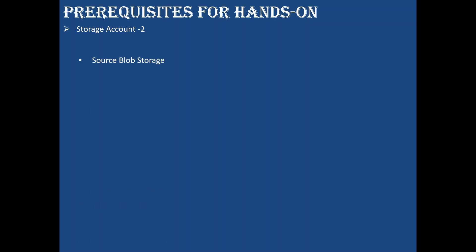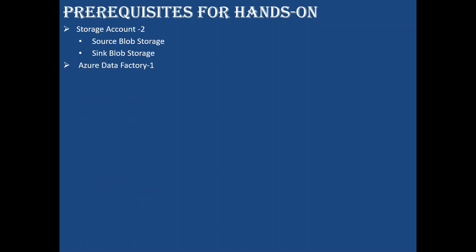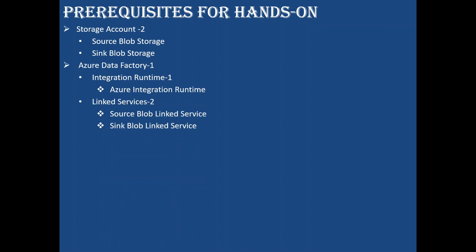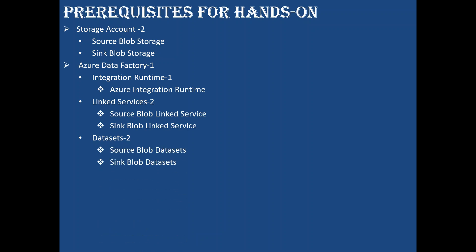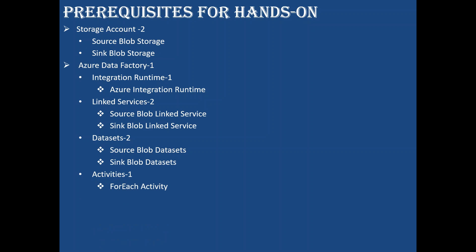I need two storage accounts — one for the source blob and one for the sink blob — and one Azure Data Factory. In that, I'll be using Azure Integration Runtime, two linked services (one for source blob, one for sink blob), two datasets (one for source blob, one for sink blob), and activities: one ForEach activity and one Copy activity. In total, two activities. Then I need one ingestion pipeline.